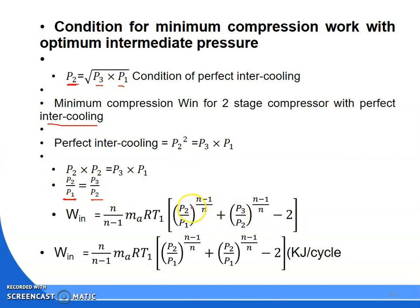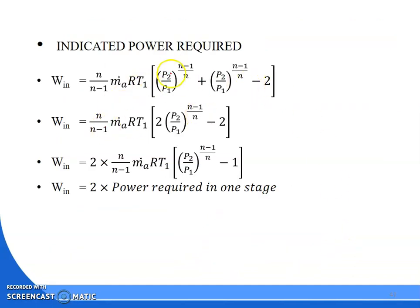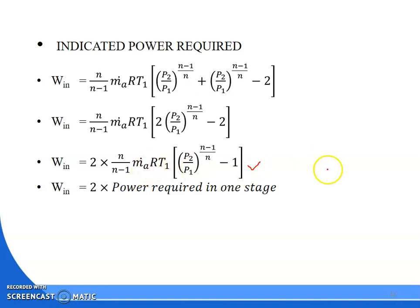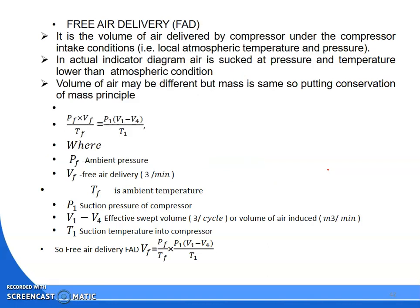Substituting P3/P2 = P2/P1 into the total work formula, we get: W = [n/(n-1)] × mRT1 × [2 × (P2/P1)^((n-1)/n) - 2], which simplifies to: W = 2 × [n/(n-1)] × mRT1 × [(P2/P1)^((n-1)/n) - 1]. So the power required in each stage is equal, and the total work input to the two-stage compressor under perfect intercooling conditions is twice the work of one stage.